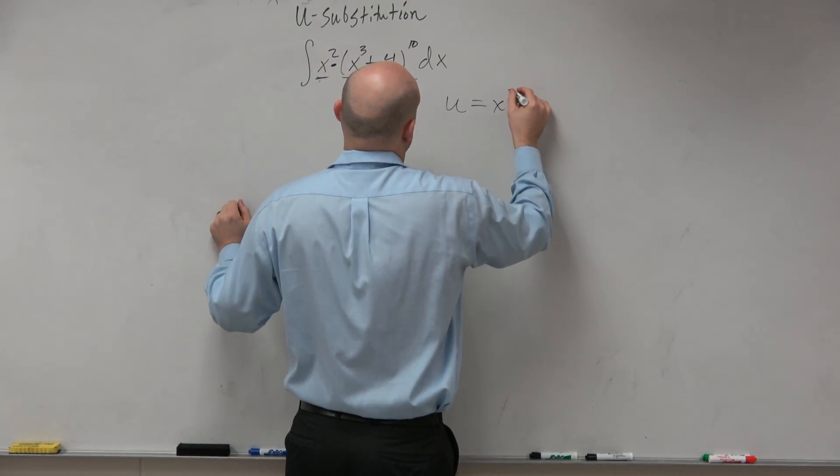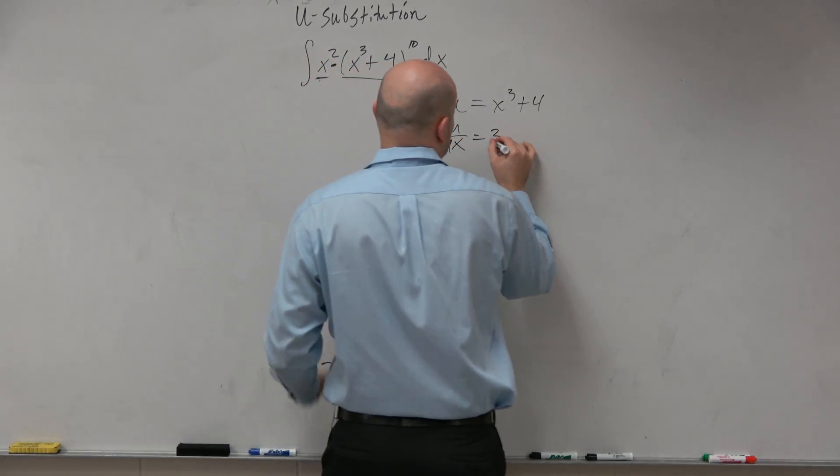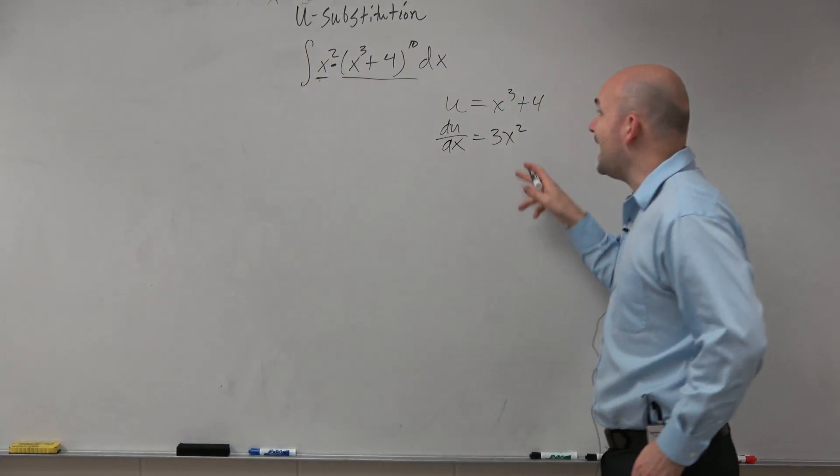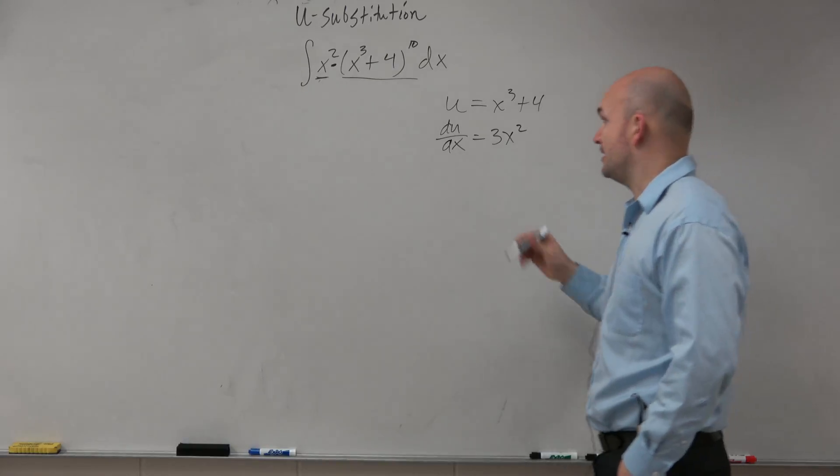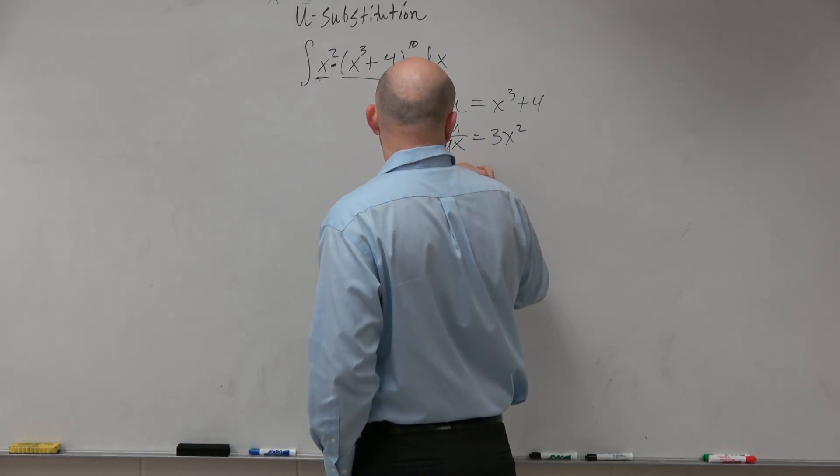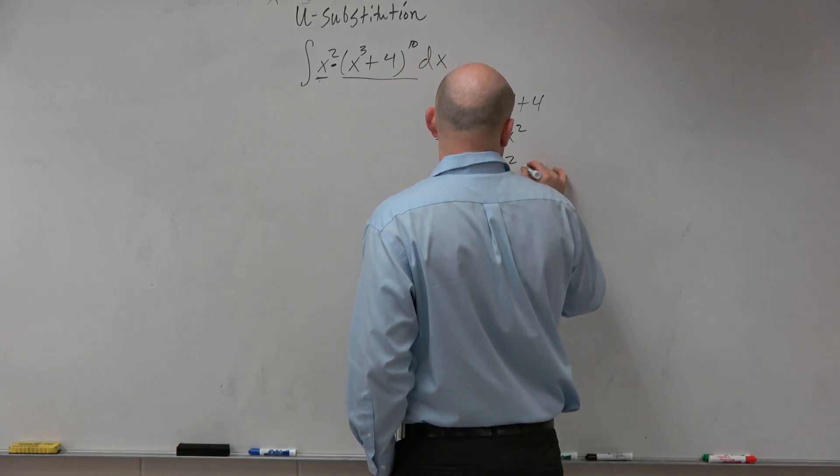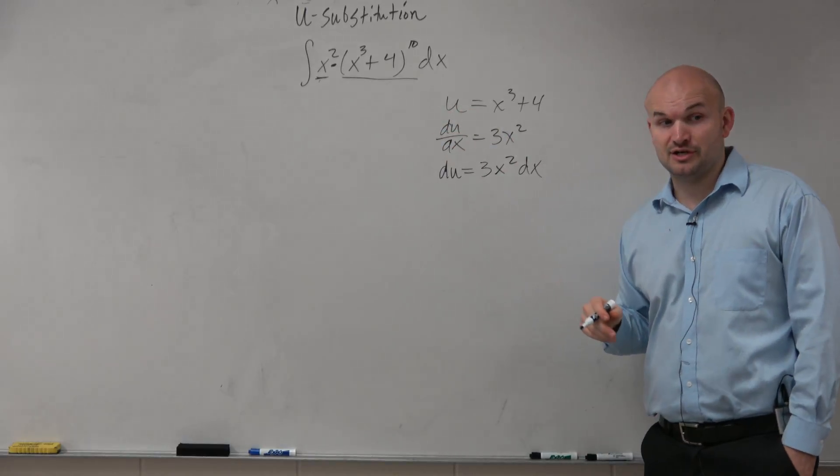We could say u is x cubed plus 4, du dx equals 3x squared. I don't have a 3x squared. Well, but I could say du is equal to, if I multiply by dx on both sides, 3x squared dx. Now, I have the x squared. That's good.